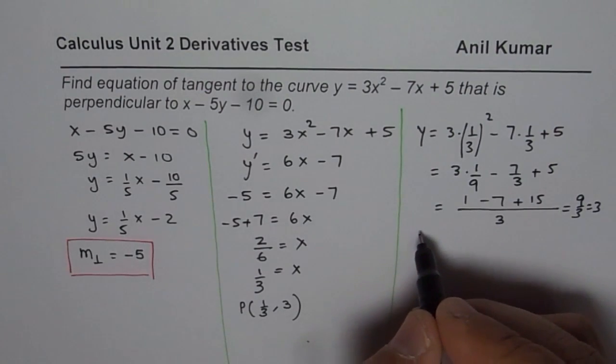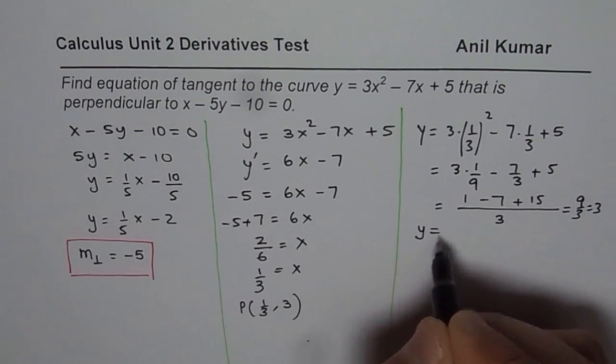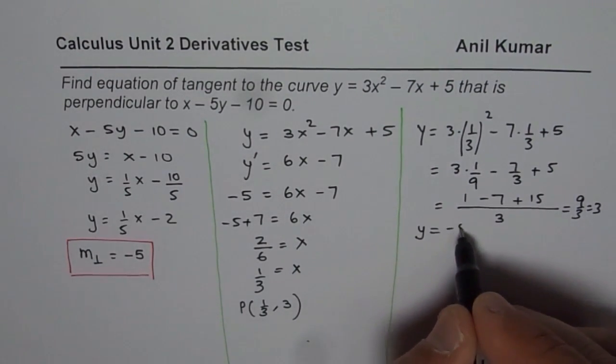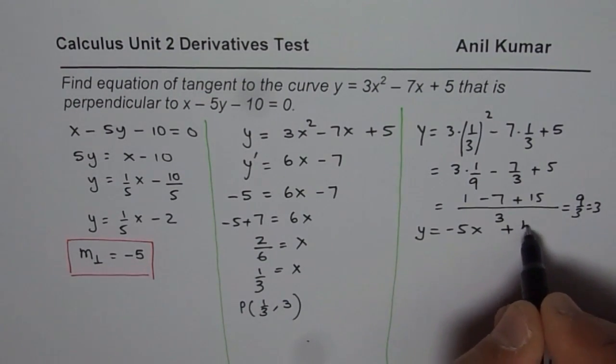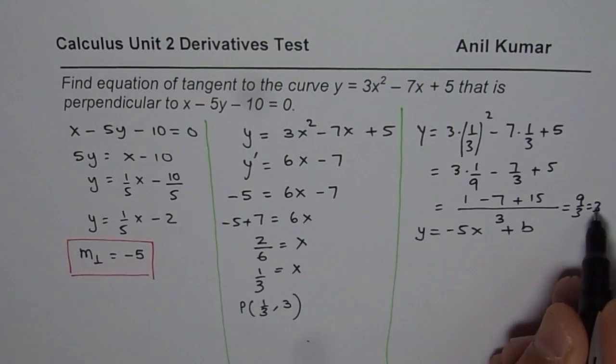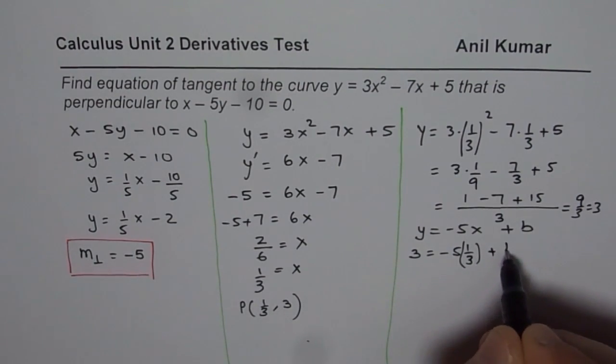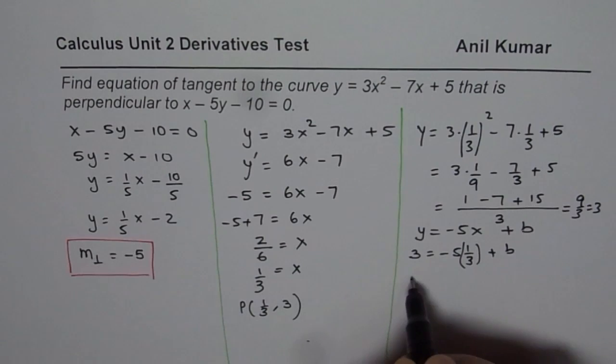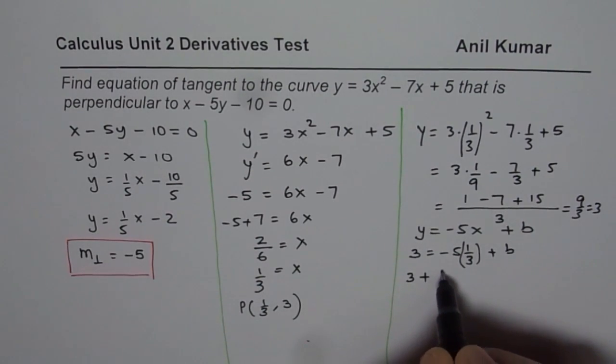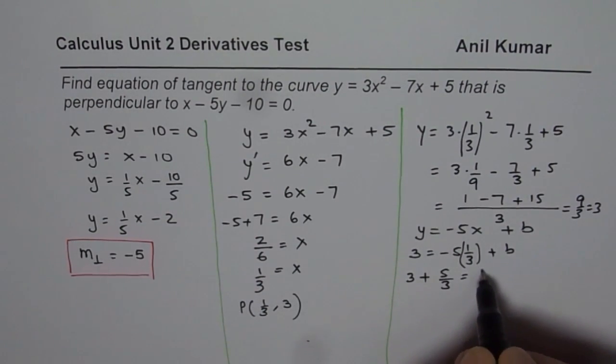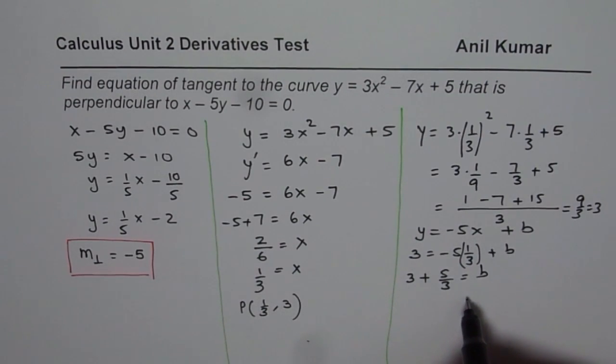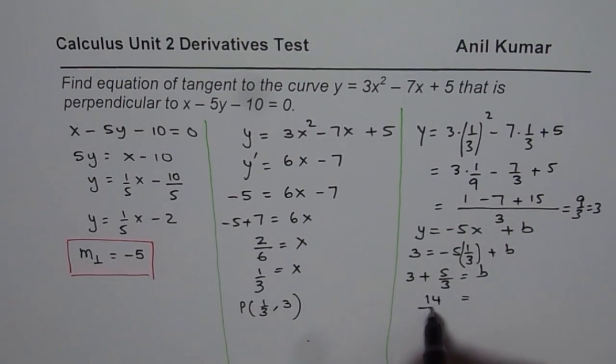So we can say equation of the tangent line is y equals slope is minus 5, x plus b. To find the value of b, we will write y as 3 minus 5 times 1 over 3. That is multiplied by b. So b equals 3 plus 5 over 3. That is the value of b. And this equals 9 plus 5 which is 14 over 3.